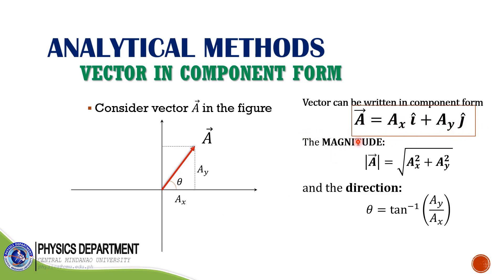You can write vector in component form, which is equal to AX i-hat plus AY j-hat. From this, you can solve for magnitude equal to the square root of AX squared plus AY squared. Once you calculate the magnitude, it is always the square root of AX squared plus AY squared.